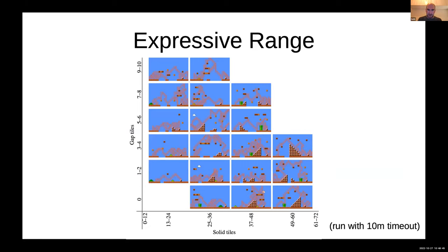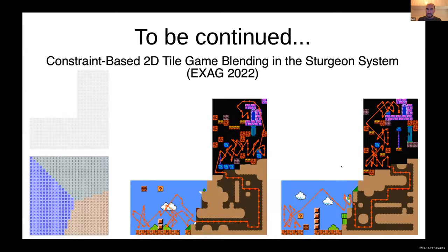This is also an example of doing expressive range coverage. Here we have a grid where the x-axis is how many solid tiles you want in the level and the y-axis is how many gap tiles you want in the level, blanks along the bottom. You can run a doubly nested for loop and run the solver for each cell in the grid, and you get a variety of levels along those various axes. If you can express the thing that you're trying to look at the expressive range of as a constraint, then you can use this technique. These ran with a timeout, so if it didn't find something in that time, there's a blank there.